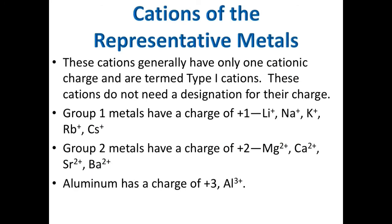Back to the cations of the representative metals: these generally have only one charge and are termed Type 1 cations. They do not need a Roman numeral. Group 1 metals — lithium, sodium, potassium, rubidium, and cesium — are +1. Group 2 metals — magnesium, calcium, strontium, and barium — are +2. And here is aluminum, which I forgot on the previous slide: it is +3.